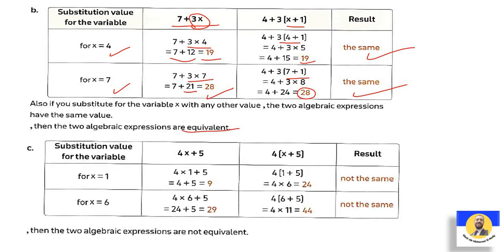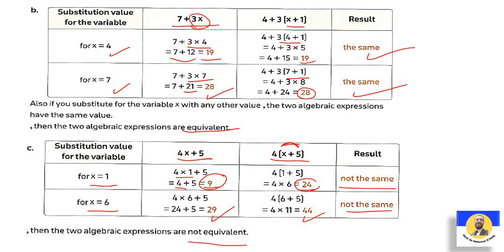Part c: 4x+5 and 4(x+5). Check x=1: 4×1+5=4+5=9, and 4×(1+5)=4×6=24 — not the same! Check x=6: 4×6+5=24+5=29, and 4×(6+5)=4×11=44 — not the same. So these expressions are not equivalent.